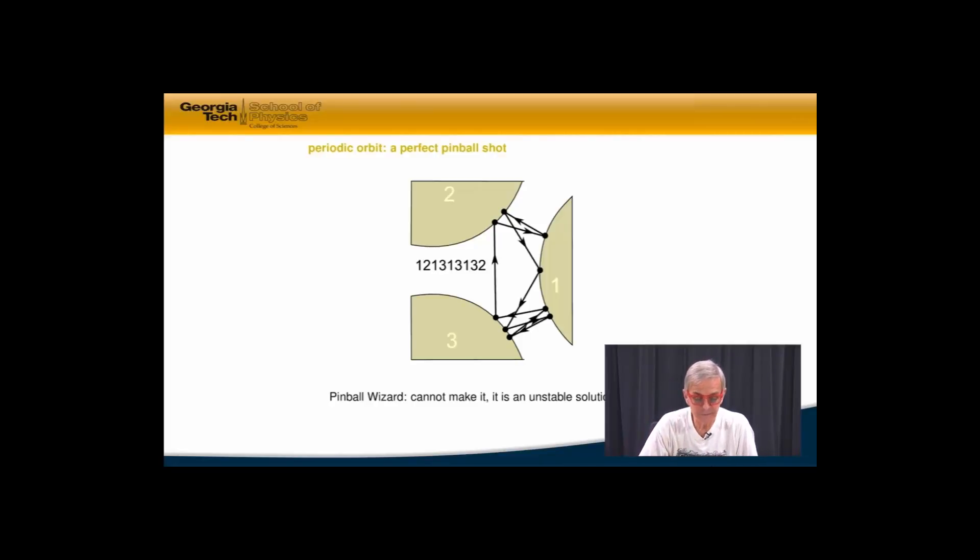So here is an example of a perfect pinball shot. It would be a periodic orbit in which you start at disc one, you go to disc two, you go to disc one, you go to disc three, one, three, one, et cetera.